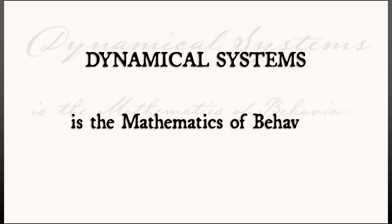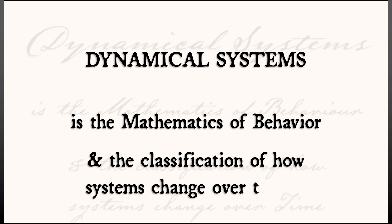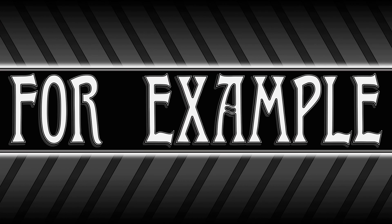Dynamical systems is the mathematics of behavior. It involves the classification of how a system evolves or changes over time. Now, what does that mean? What does that involve? Well, let's look at a few examples.